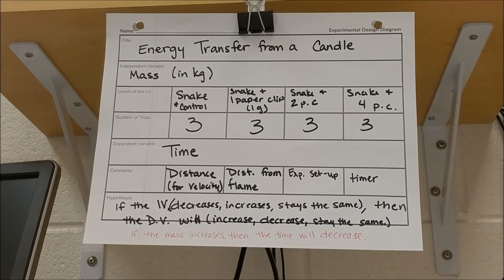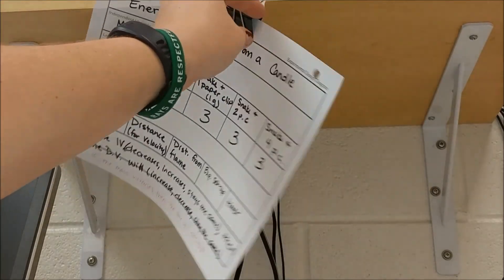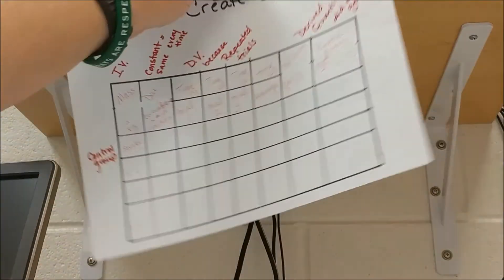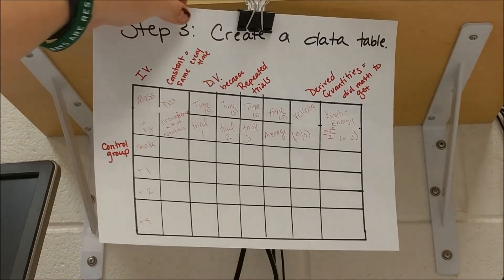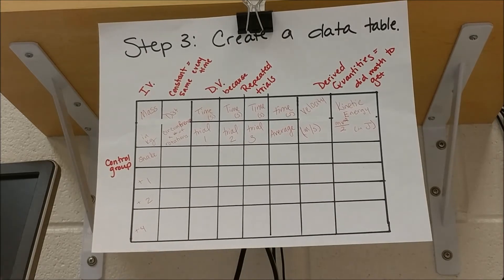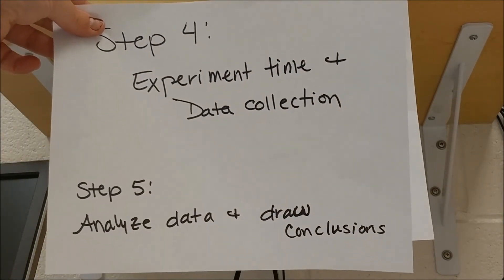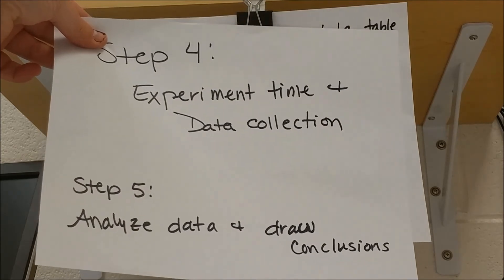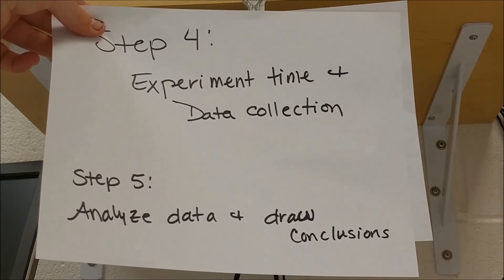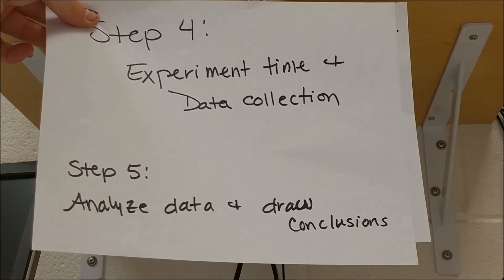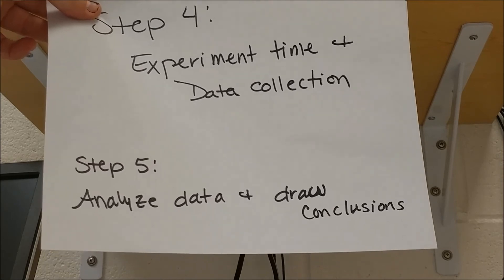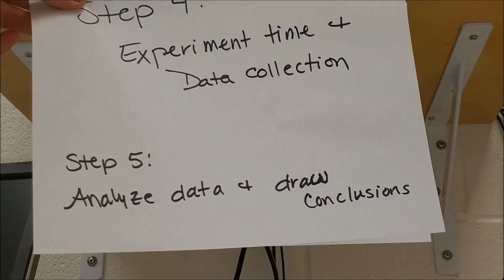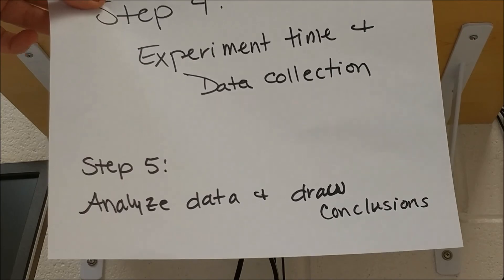Now that you have your experimental design diagram, you should create a data table. Then the fourth and final step is to actually do the experiment — you write a procedure based on your data table and your lab, conduct the experiment, and draw conclusions. That's how you utilize an experimental design diagram and create this experimental design process.